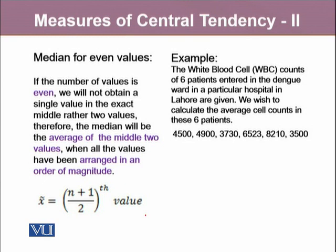If the number of values in our data are even, we will not obtain a single value in the exact middle. Rather, there will be two values. Hence, the median will be the average of those two middle values obtained from the ordered array. Let's take the example and add one more value, 3500, into the white blood cell counts. Now we have six observations, which is an even number. Therefore, to calculate the median out of this data, we need to order it into ascending order.